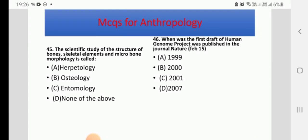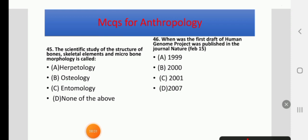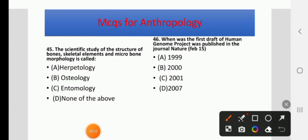The scientific study of the structure of bones, skeletal elements, and micro-bone morphology is called — Herpetology, Osteology, Entomology, or None of the above. The right answer is B: Osteology.